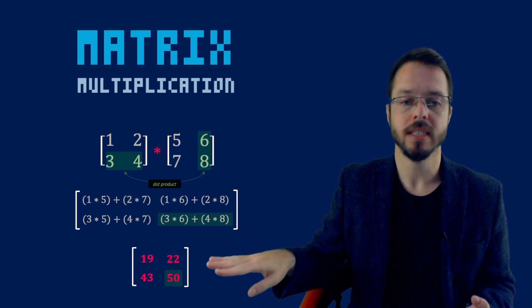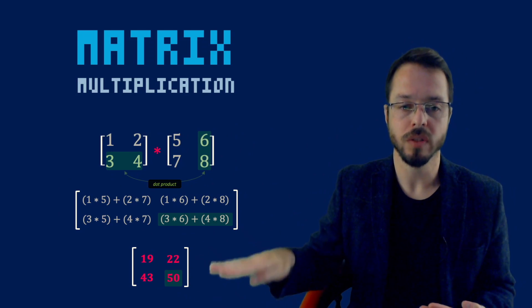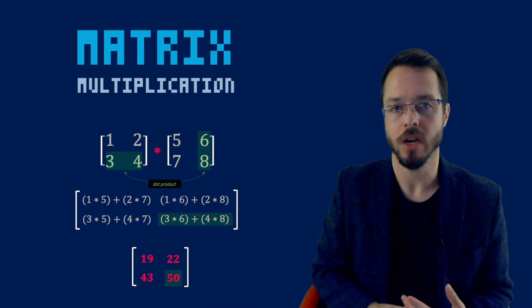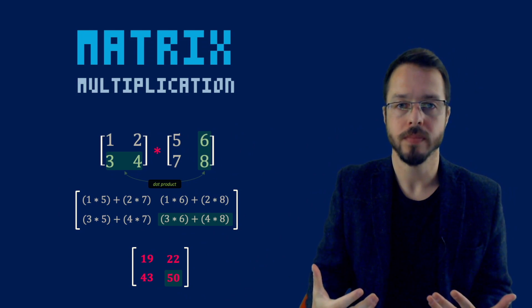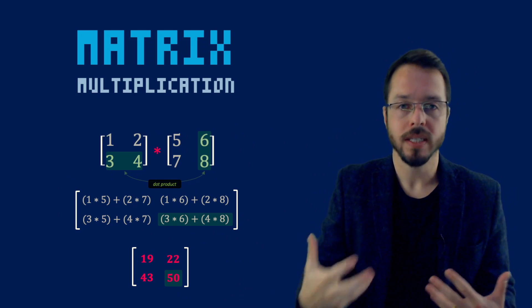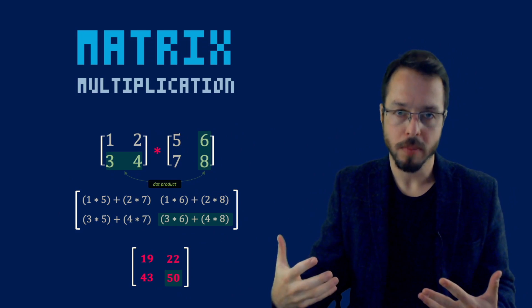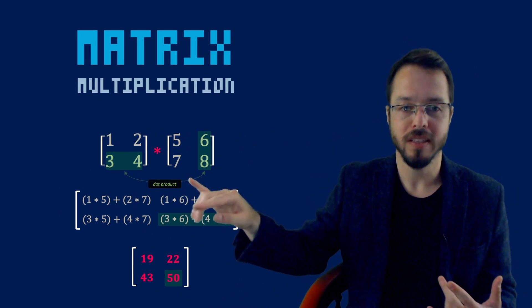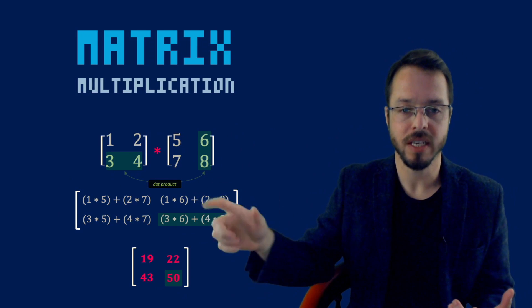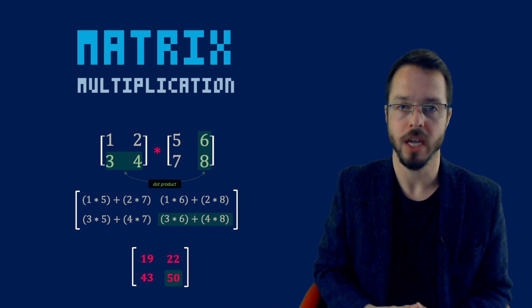This resulting matrix — 19, 22, 43, 50 — is the result of the multiplication of these two matrices. This is the algorithm. I always like to bring in the idea of the dot product between the sub-vectors when looking at these entries. This is how you get matrix multiplication.